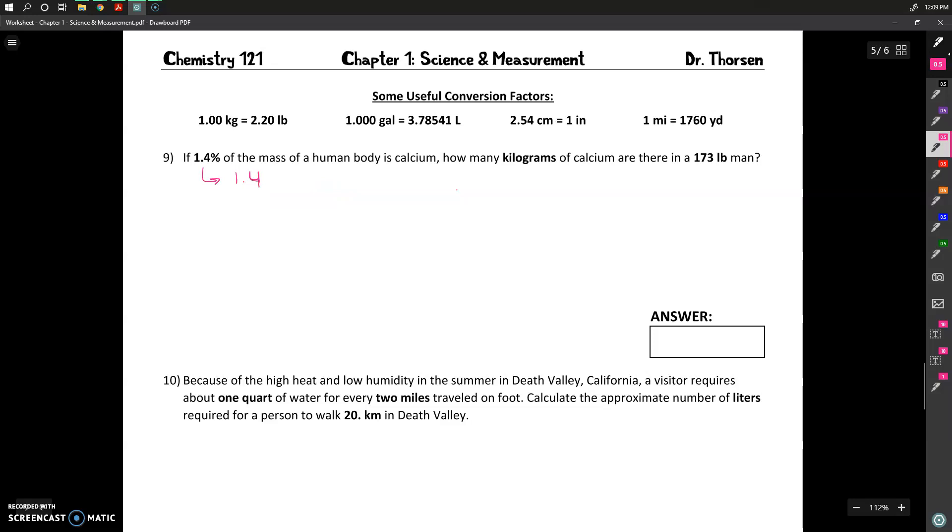So 1.4 of what? Well, it's 1.4% of the mass of a human body is calcium. So that means 1.4 grams of calcium would be in every 100 grams of body weight is how that would work.